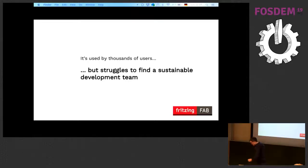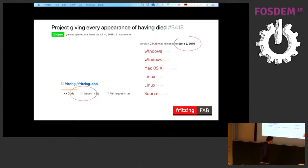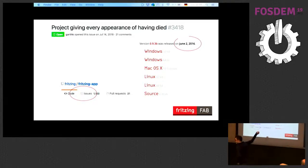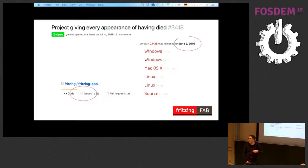Now it gets more interesting, because Fritzing, like a lot of open source applications, has a problem: it's not able to find developers and maintainers. The indicators you see at a lot of open source projects — open issues, open pull requests, latest release three years ago — suggest the project has died. Not because few people use it, but there's no development ongoing.